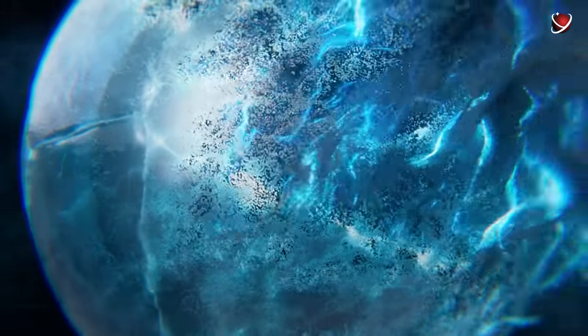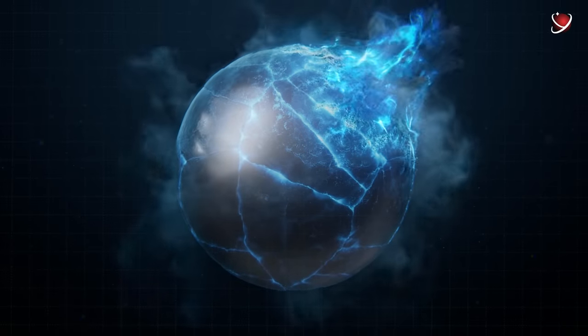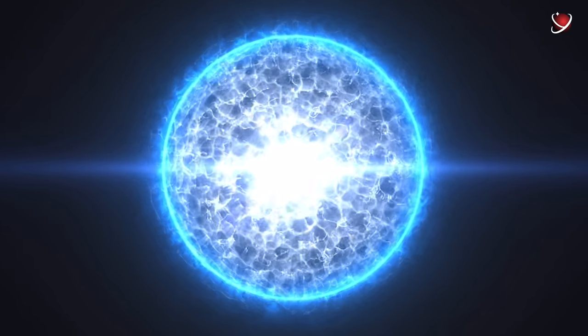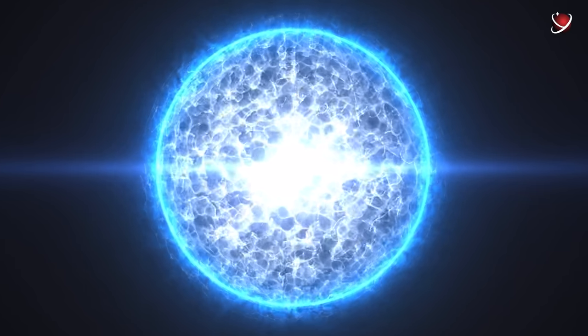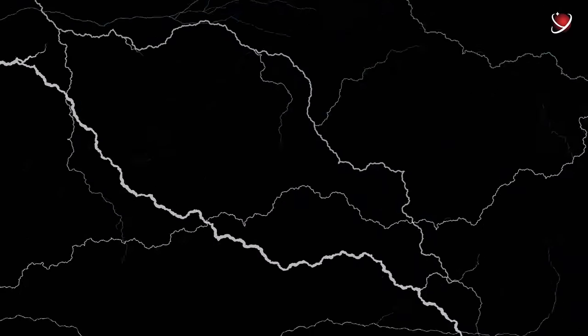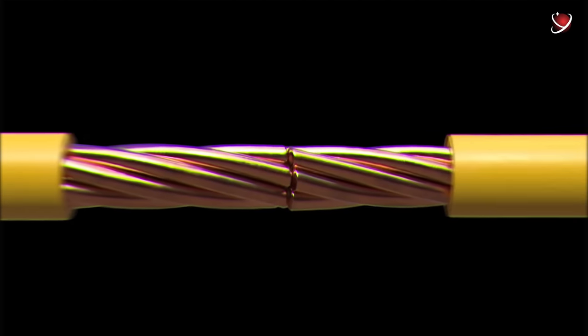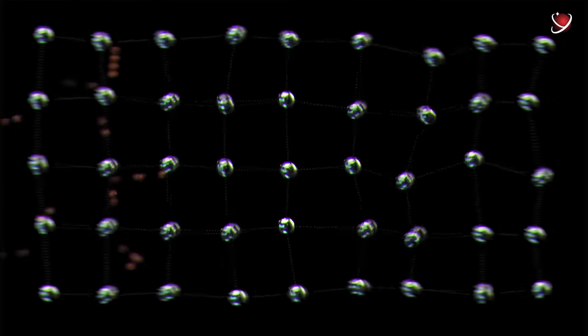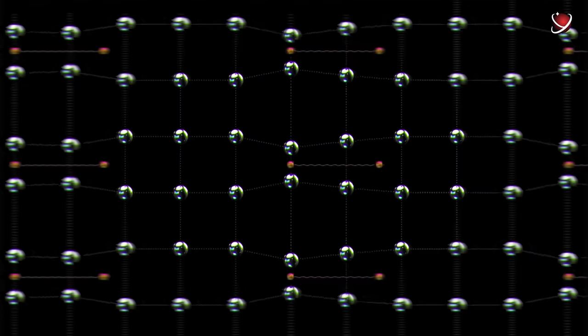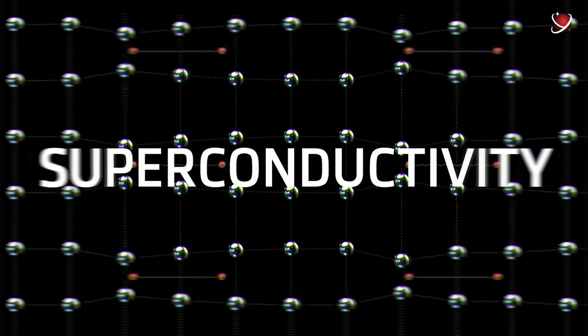Exploring the properties of metals during deep cooling, scientists discovered an amazing phenomenon. Some metals almost completely lose their electrical resistance at a temperature close to absolute zero. They become ideal conductors, capable of passing a current through a closed circuit for a long time, without the source of electricity itself. The phenomenon was called superconductivity.